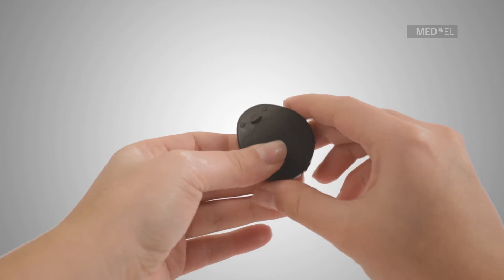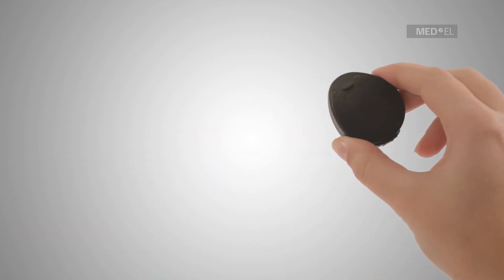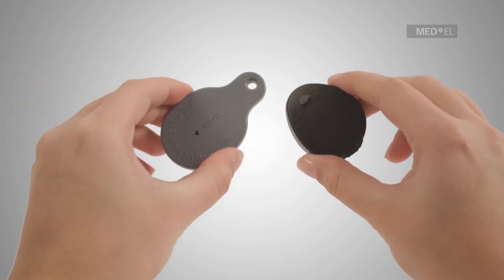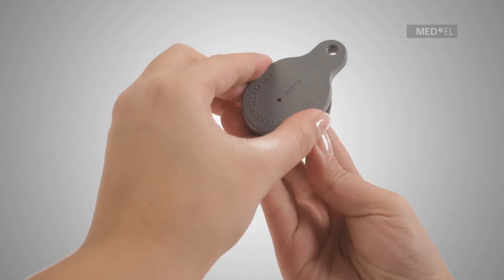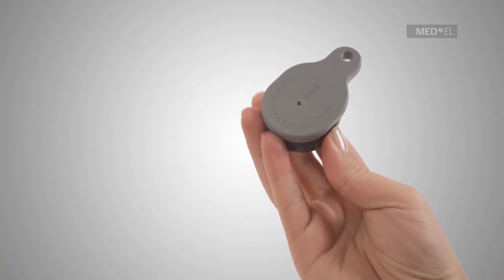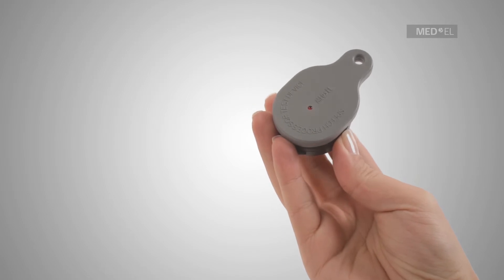After first switching it on, place the RONDO underneath the Speech Processor Test Device. The RONDO should be upside down and the red indicator light of the Speech Processor Test Device should be face up.